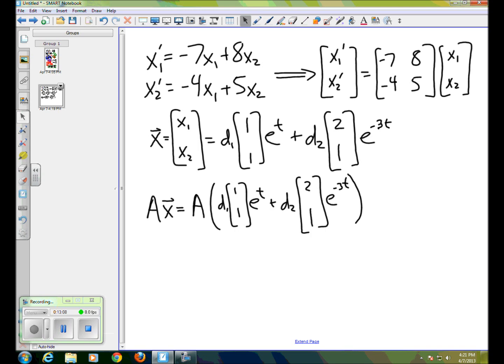But due to properties of matrix multiplication, the d1 and the e to the t, and the d2 and the e to the minus 3t are all scalars. So the matrix A, we can simply distribute it, so to speak, and have it multiply the vectors 1, 1, and 2, 1, and put those results in times the scalars that are there. So when we do that, A times 1, 1, let's see, let's do that off to the side.